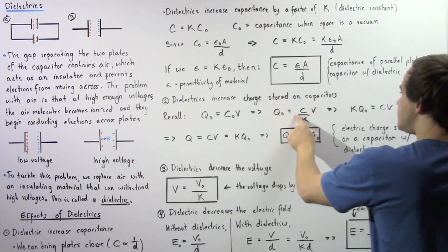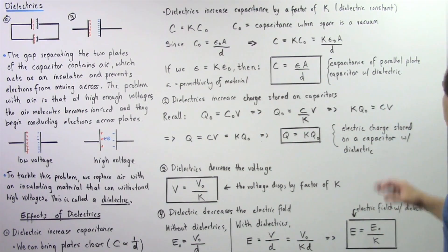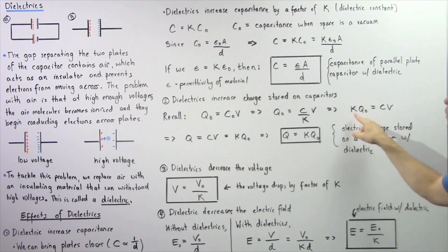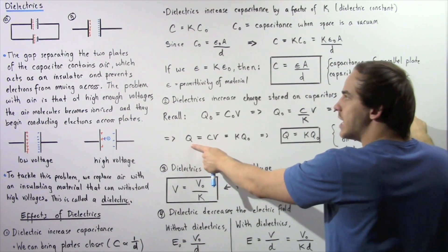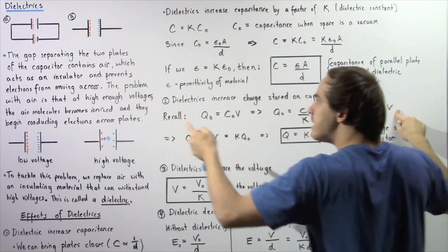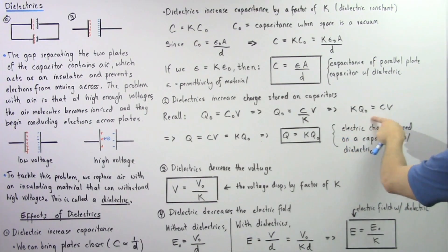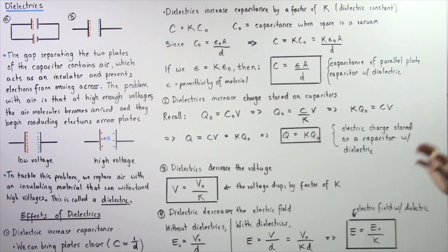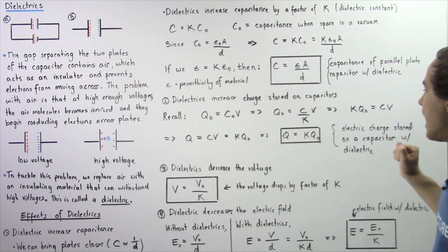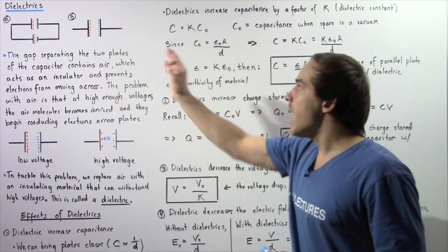Replacing C0 with C divided by K and rearranging, we get that C times V equals K times Q0. This means Q, the quantity of electric charge stored on the capacitor with a dielectric, equals K times Q0. So the charge stored with a dielectric is equal to the dielectric constant K multiplied by the original charge Q0.